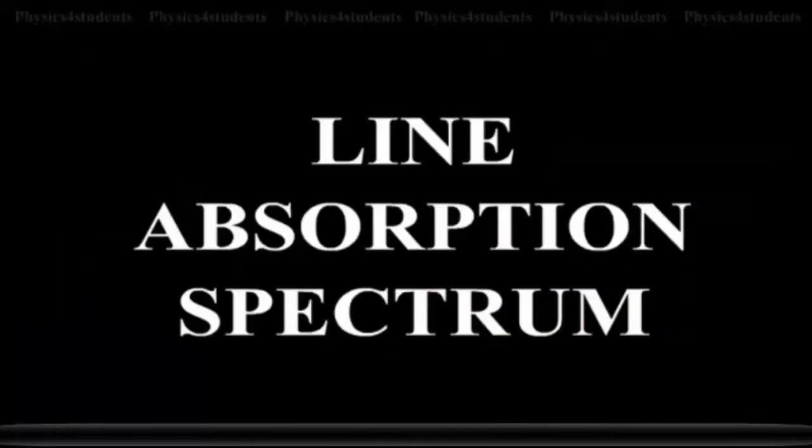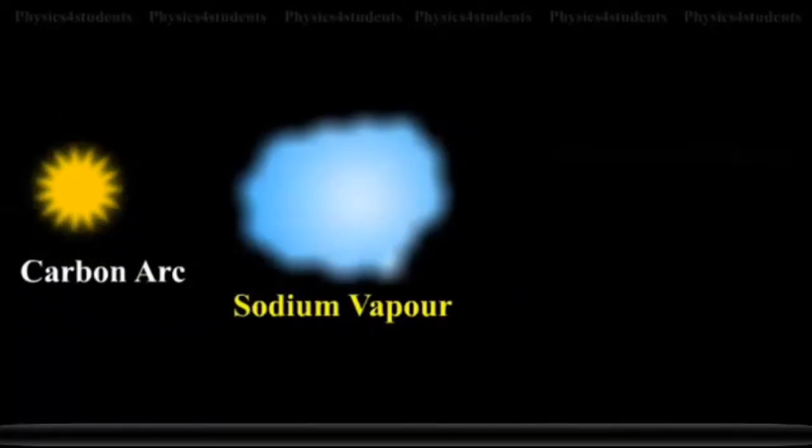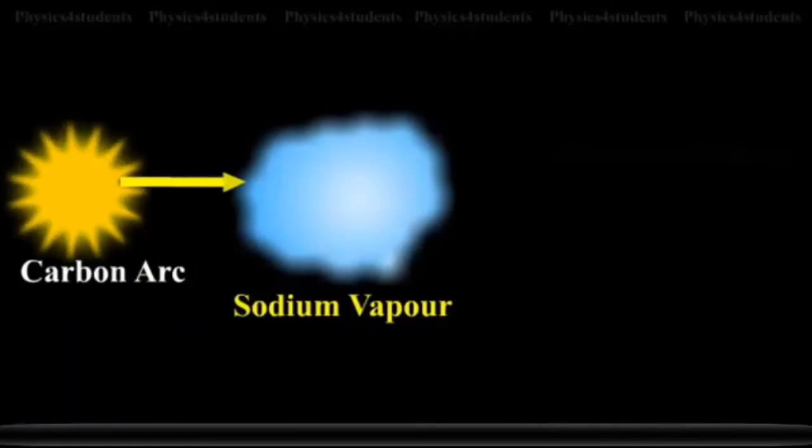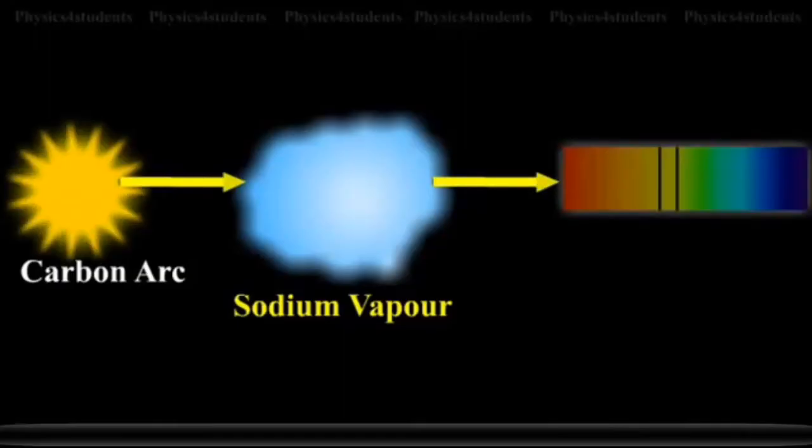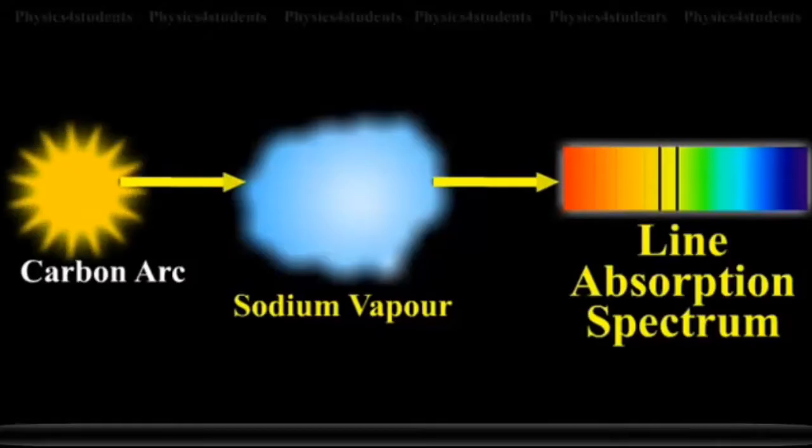Line Absorption Spectrum. When light from the carbon arc is made to pass through sodium vapor and then examined by a spectrometer, a continuous spectrum of carbon arc with two dark lines in the yellow region is obtained as shown in the animation.